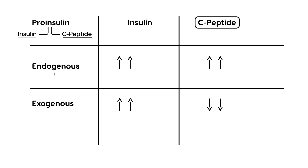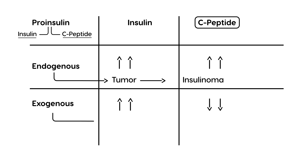Some examples: an endogenous source would be a tumor like an insulinoma. An exogenous source would be a factitious disorder, where someone is injecting themselves with insulin and trying to fake symptoms.